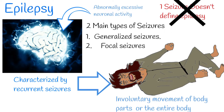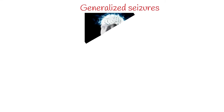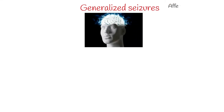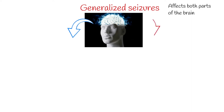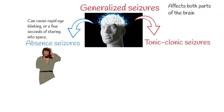There are several types of seizures. First, generalized seizures affect both sides of the brain. Generalized seizures can be of two types: absent seizures and tonic-clonic seizures. Absent seizures can cause rapid eye blinking or a few seconds of staring into space. Sometimes it is hard to tell when a person is having an absent seizure.